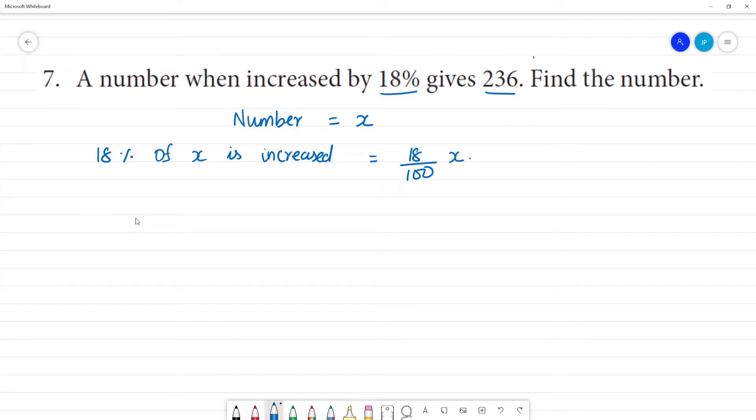That is equal to 18 by 100 into X. The final number now: number X plus increase, where increase is 18 by 100 of X increase. Clear out?